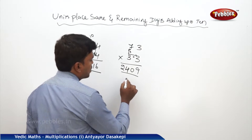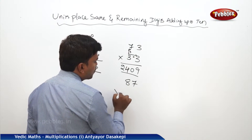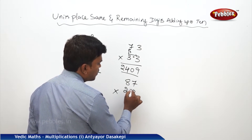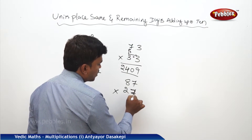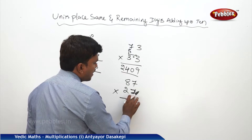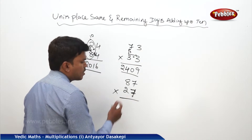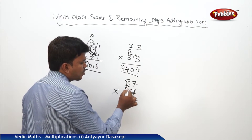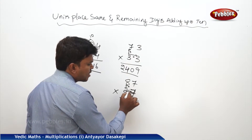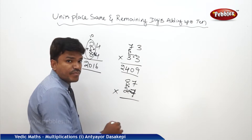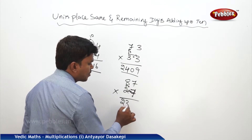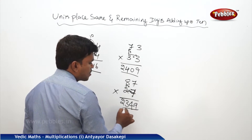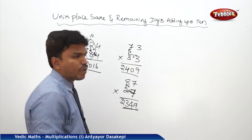One more example: 87 into 27. Multiply 8 into 2: 16. Add the units digit 7: 16 plus 7 is 23. Write 23 on the left. Now 7 into 7 is 49. So your answer is 2349.